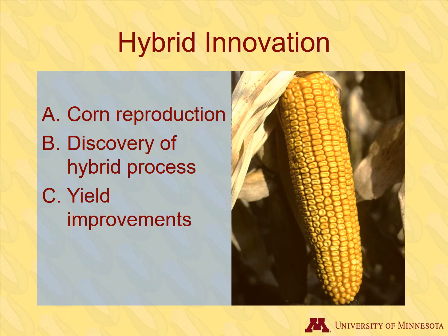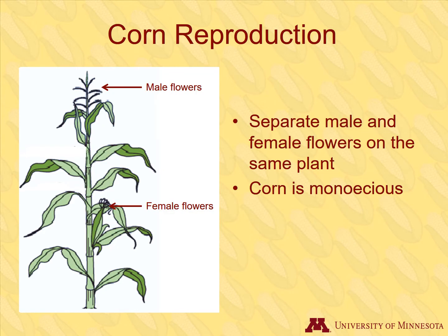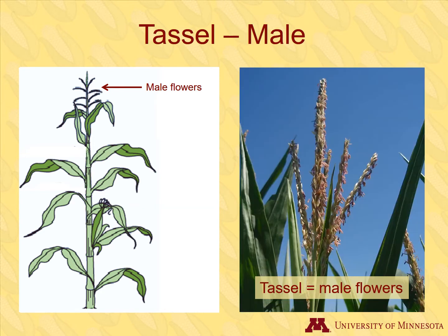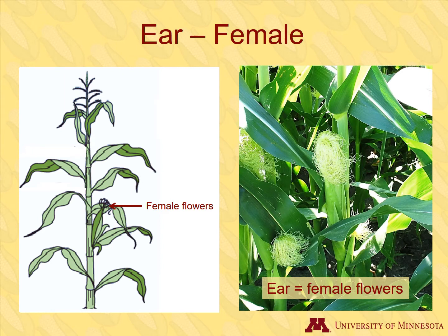Let's briefly review how corn reproduces before we discuss hybrids. Flowers are important when it comes to the reproduction of plants. Corn has separate male and female flowers that are on the same plant — the term for this type of arrangement is monicious. The tassel is the male reproductive structure for corn, and the male flowers within the tassel produce pollen, which contains the male gametes. The ear is the female reproductive structure for corn, and it's composed of many female flowers. It produces a silk for each one of its eggs, which are the female gametes.